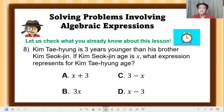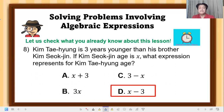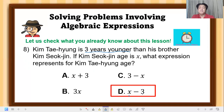Number 8: Kim Tae-yung is three years younger than his brother Kim Shokjin. If Kim Shokjin's age is x, what expression represents Kim Tae-yung's age? The correct answer is letter D: x − 3. When we say 'three years younger,' that means subtraction — he is less, so we subtract. Kim Shokjin's age is x, so Kim Tae-yung's age is x − 3. I hope you learned from this lesson!